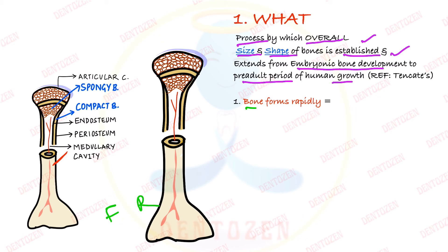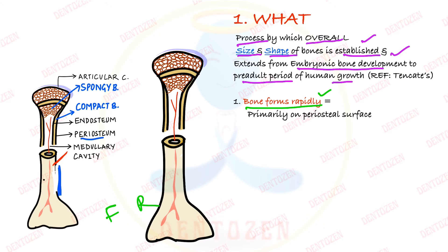Bone forms rapidly over the outer surfaces of bone — that is the periosteal surface — and where does it resorb? On the inner surfaces, so that the bone can increase in size. Resorption occurs on the endosteal surface, which is the inner surface, and can also occur over some focal points of the periosteum.